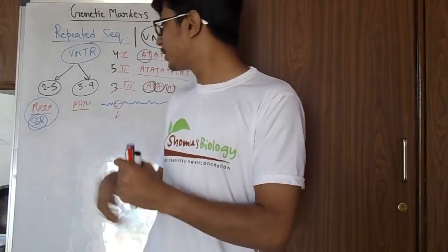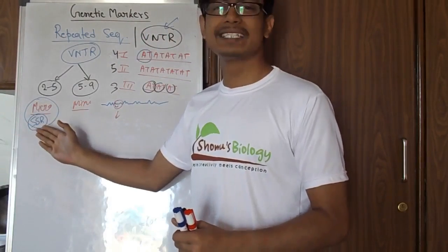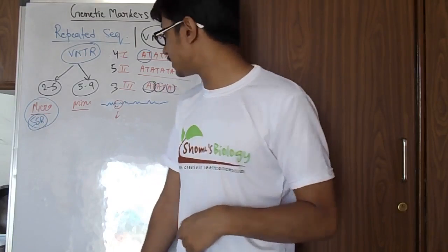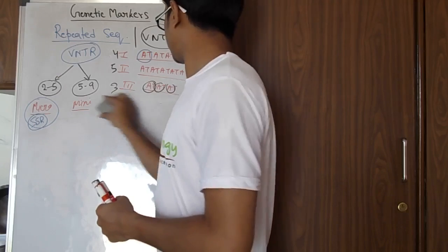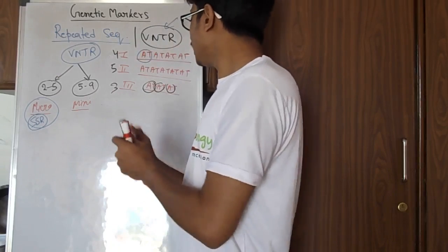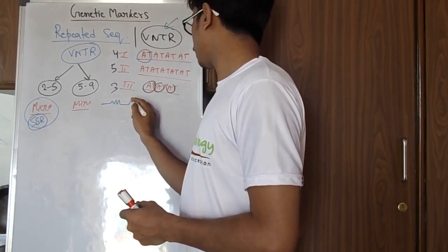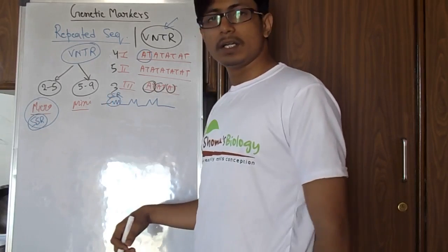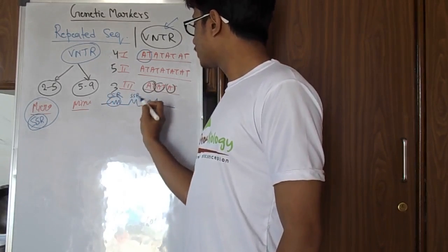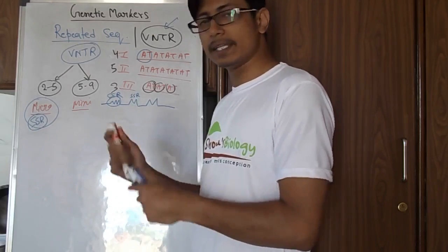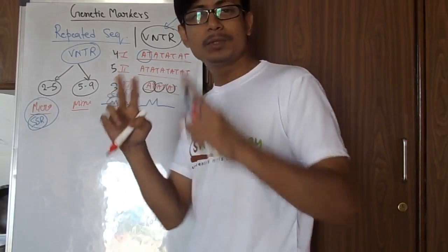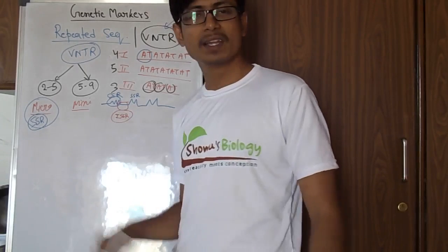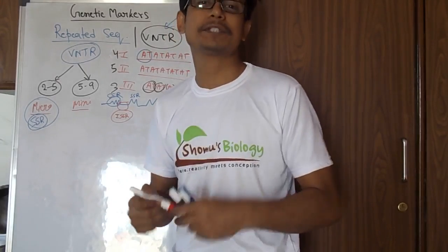Why are these sequences important? An example of a micro-satellite is the SSR — simple sequence repeat — where AT repeats are present multiple times. In a diagram, if we have normal DNA regions with repeated elements interspersed, the nucleotide sequence present between two SSRs is called ISSR — inter-simple sequence repeat. This ISSR can also be used as another type of genetic marker.